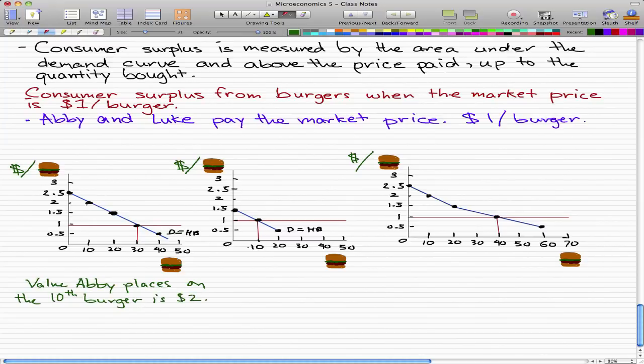That can be seen from the graph here, where the arrow is pointing. Up to the 10th burger, Abby is willing to pay $2.